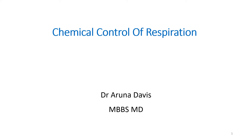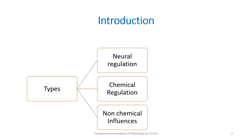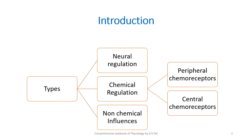In this video, we will be studying about the chemical control of respiration and how to approach this question during exams. We start with an introduction showing the different types of regulation of respiration. We have three types: neural regulation, chemical regulation, and non-chemical influences, of which chemical regulation is done mainly by the peripheral chemoreceptors and the central chemoreceptors.